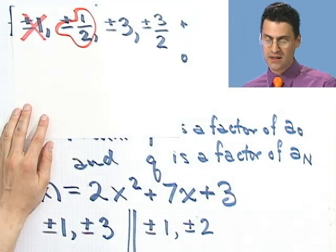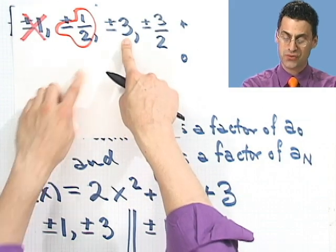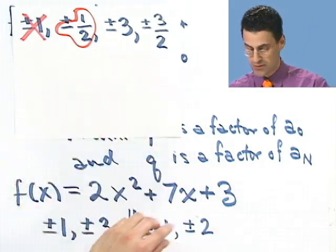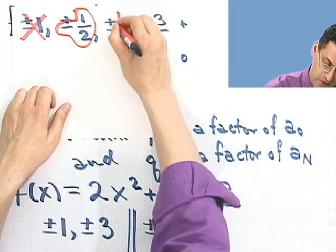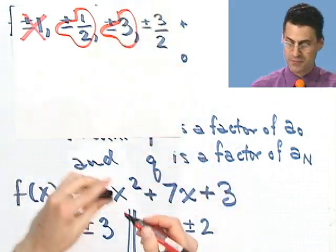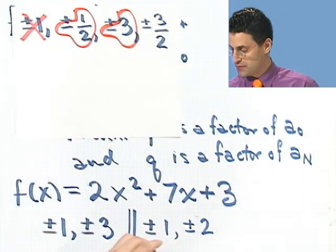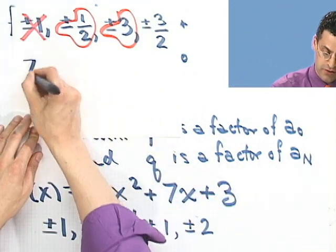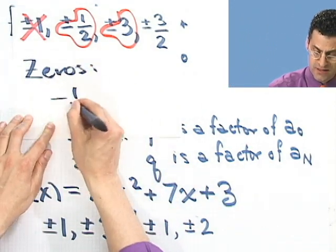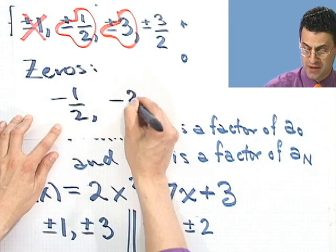And if you were to keep going, you would see here, in this next example, that minus 3 is also a rational root. And the other ones are not. So in fact, I found both roots, both zeros. So the zeros, they're rational. One's at minus 1 half, and one's at minus 3.